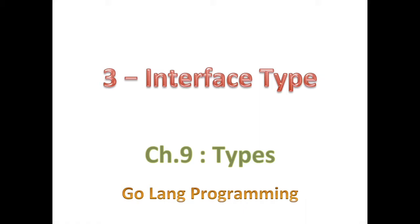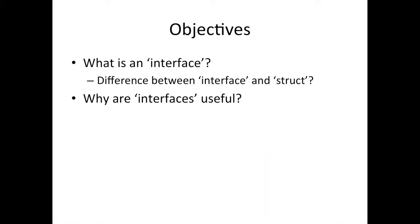We didn't really need interfaces before, so we didn't cover them when we were covering basic types. We'll have plenty of opportunities to be confused about interfaces, so no need to keep talking about it. So what is an interface? To get at what an interface is, I'm going to draw a distinction between an interface and a struct, because we understand what a struct is by now, and then we'll look at why interfaces are useful.